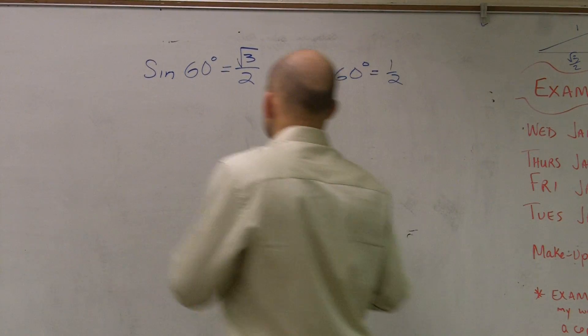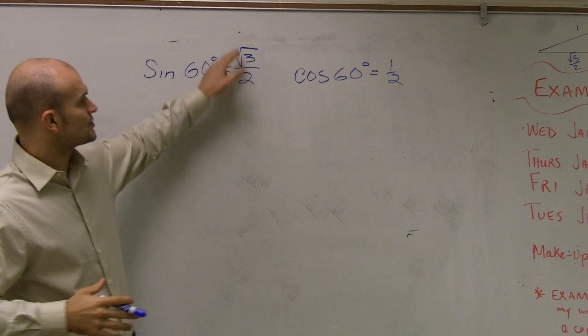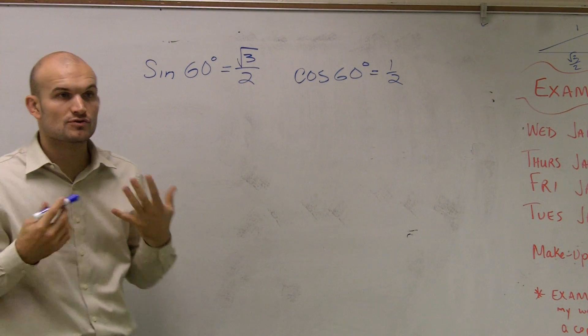All right, so what we have is two angles. We have sine of 60 degrees equals square root of 3 over 2, and cosine of 60 degrees equals 1 half.